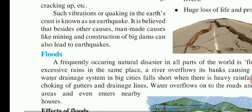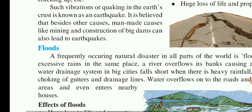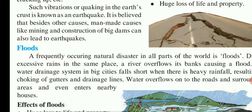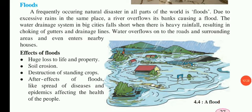Flood is a frequently occurring natural disaster in all parts of the world. Due to excessive rains in the same place, a river overflows its banks, causing a flood. The water drainage system in big cities falls short when there is heavy rainfall, resulting in choking of gutters and drainage lines. Water overflows onto the roads, surrounding areas, and even enters nearby houses.